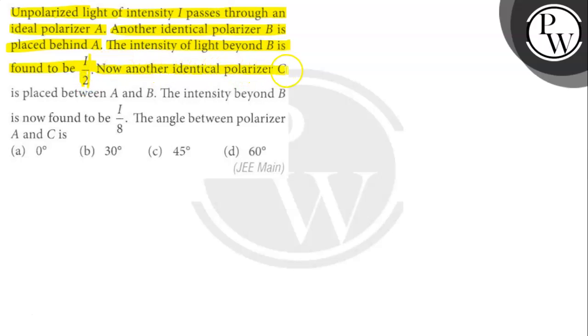Now, another identical polarizer C is placed between A and B. The intensity beyond B is now found to be I by 8. The angle between polarizer A and C is what? Let's find out.